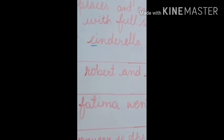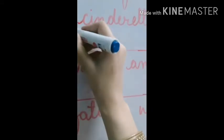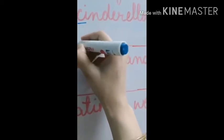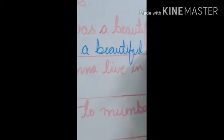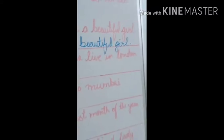Cinderella is the name of a girl, and the sentence always begins with a capital letter, so we will write C capital — Cinderella was a beautiful girl. At the end we will put a full stop, as we all know a sentence always ends with a full stop.